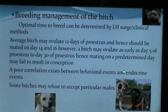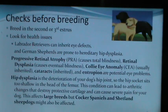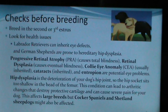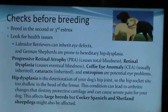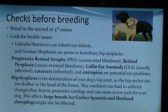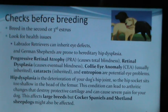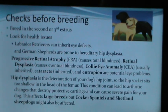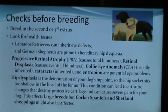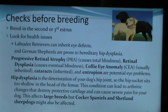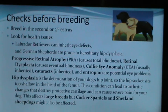Some bitches may refuse to accept a particular male. Breeders perform health checks to prevent heritable diseases. Bitches are bred in the second or third estrus. Labrador Retrievers can inherit eye defects; German Shepherds are prone to hereditary hip dysplasia. Progressive retinal atrophy, retinal dysplasia, Collie eye anomaly, cataracts, and entropion are potential eye problems that must be checked before breeding.